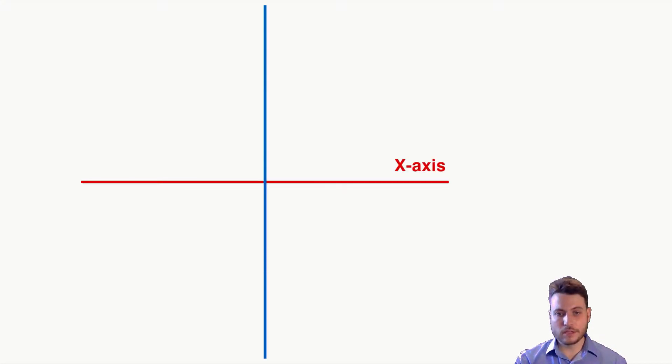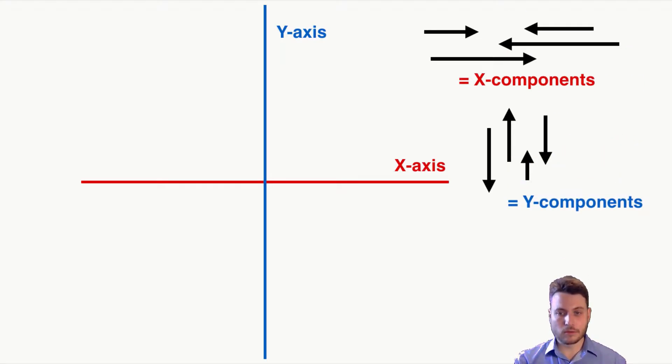So we call these x and y components because they go along the x and y axis of a graph, so we can have x components and we can have y components, and that really just means that they're pointing along the x or y axis.